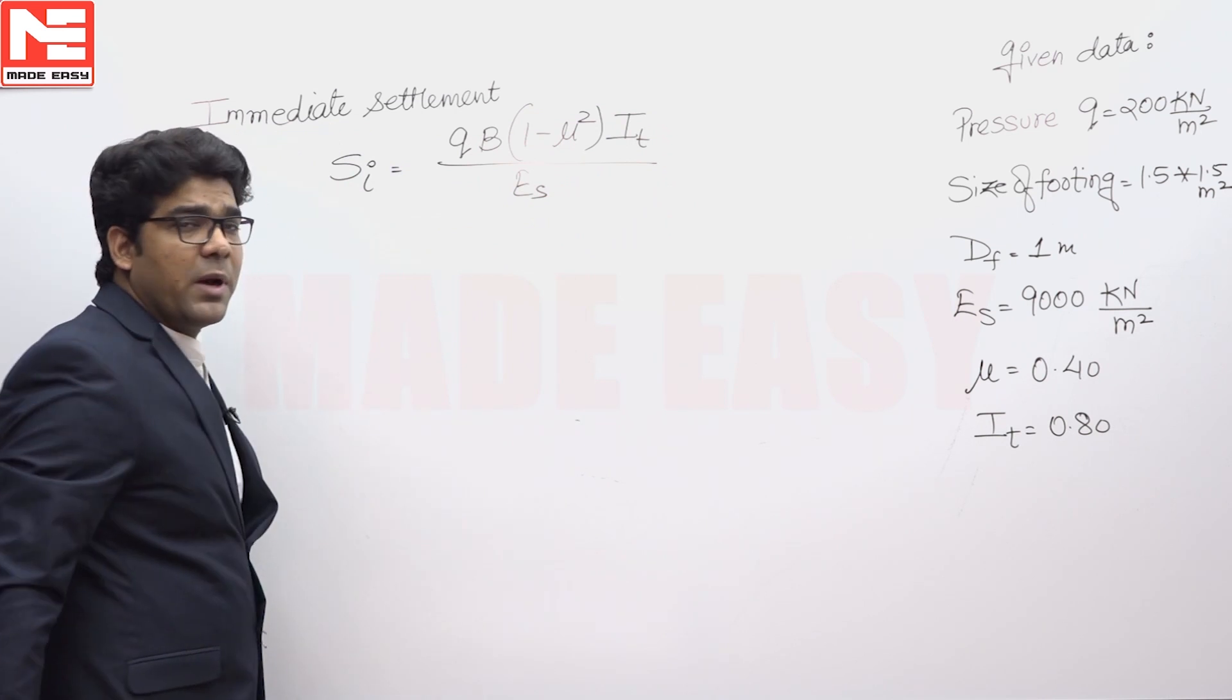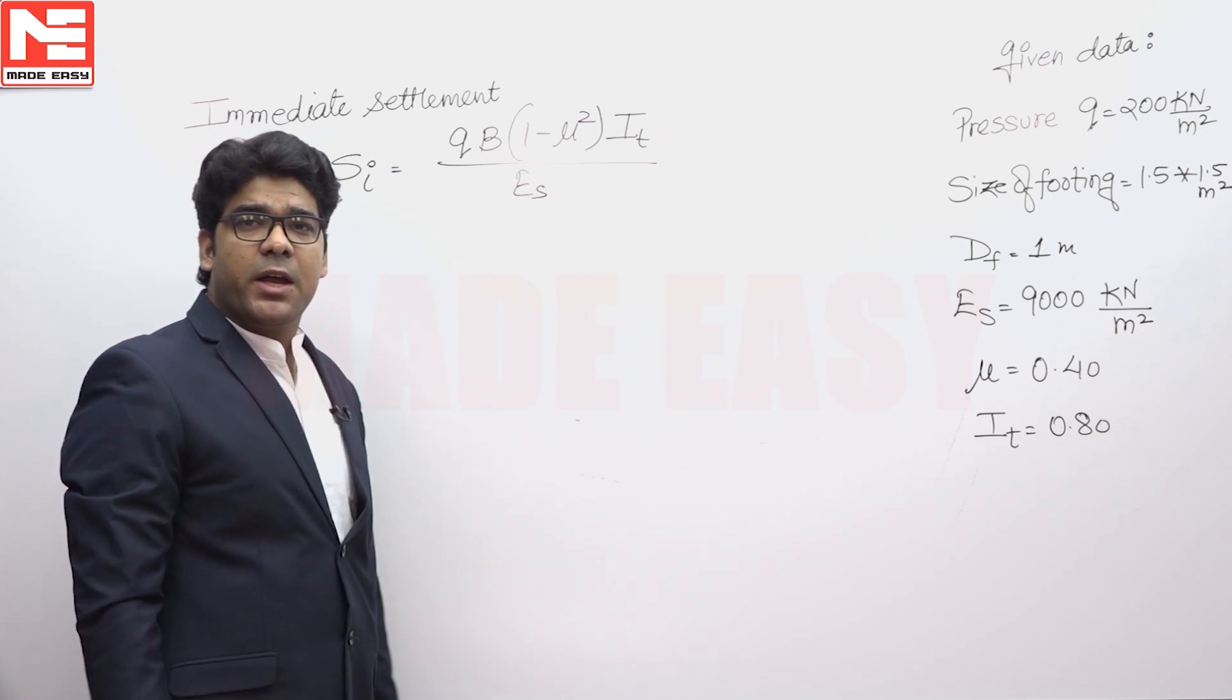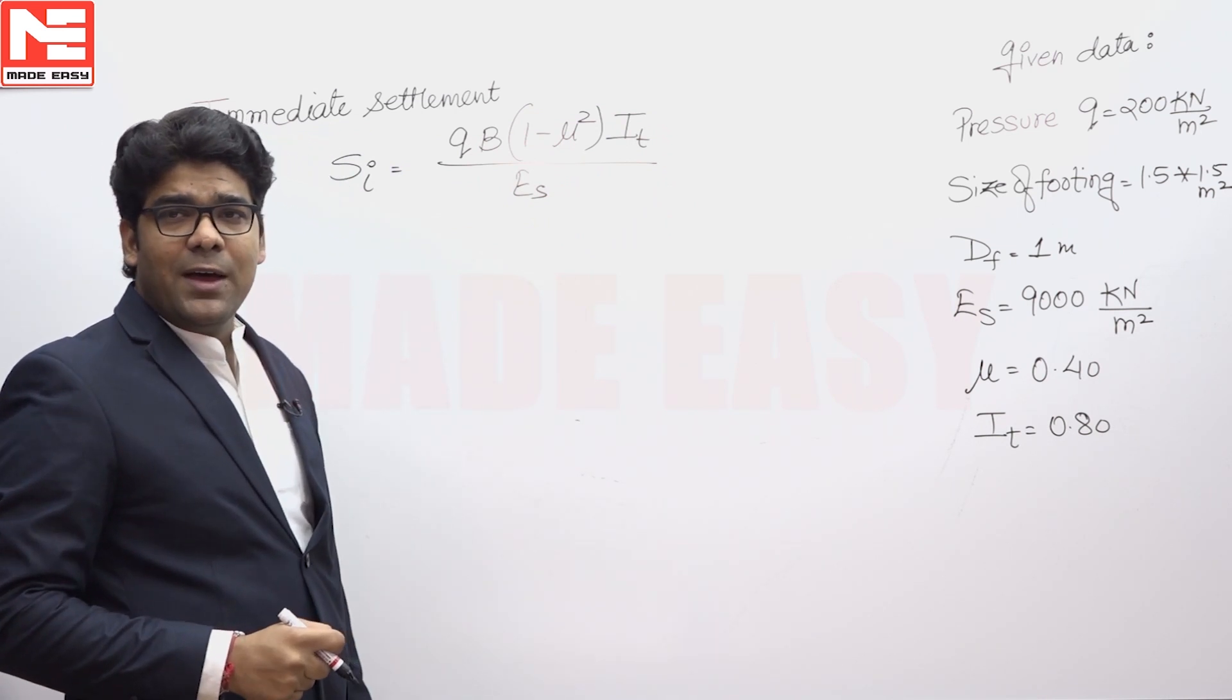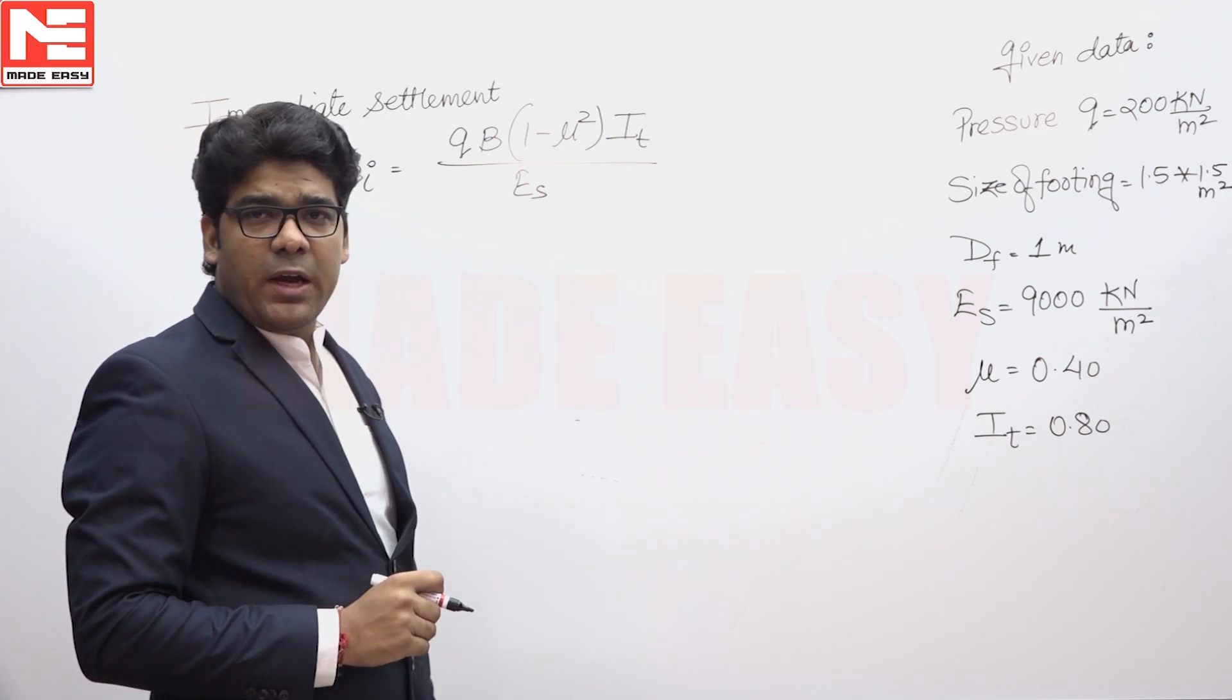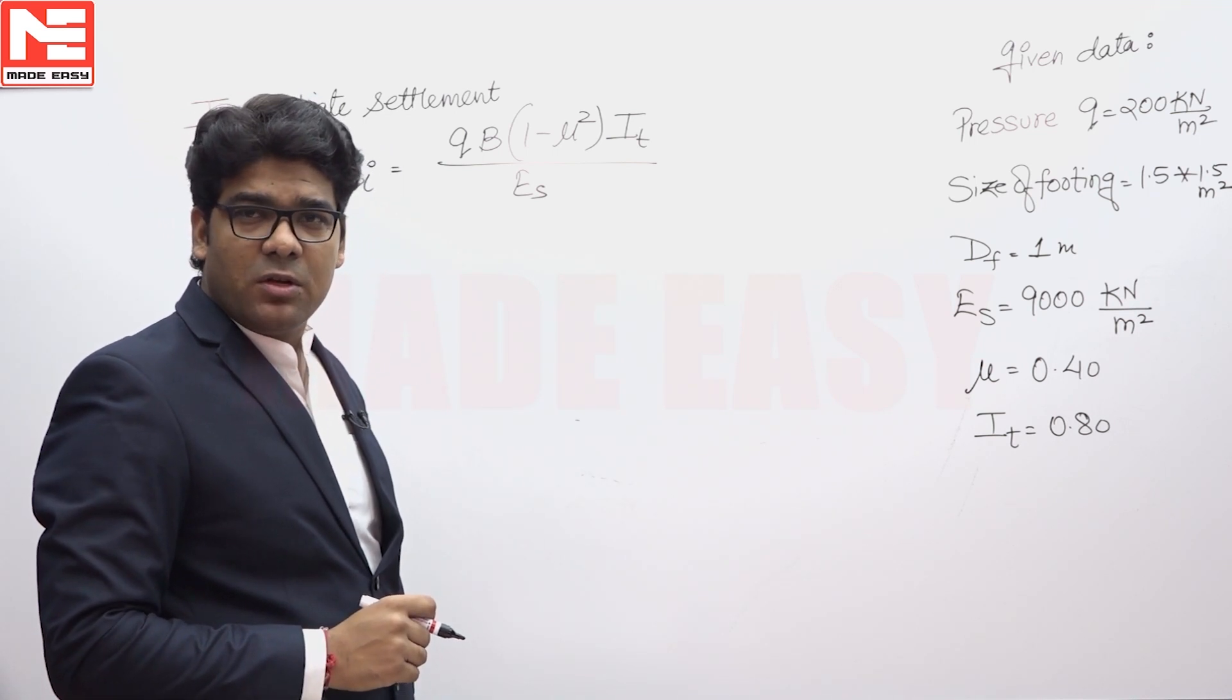Q is the load which is applied on that footing, B is the least lateral dimension, mu is Poisson's ratio, IT is influence factor that is given in this question that is 0.8 and ES is Young's modulus, that is also given.